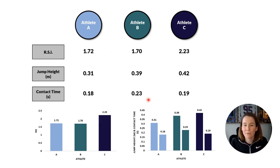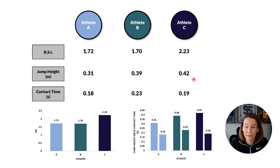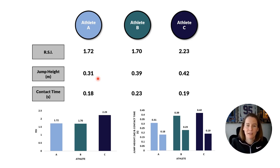With athlete B, I would be looking at whether we are cueing them well enough — are they really trying to be stiff and spend as little time as possible on the floor to reduce contact time? And what impact might that have on their jump height, given that they've already achieved a pretty good jump height? Comparing athlete A to C, athlete C is clearly most impressive in terms of reactive strength abilities, both in terms of RSI and the component parts — jumping 42 centimeters with only 0.19 seconds contact time. Athlete A and C have a fairly similar contact time, but there is a massive difference in jump height, with athlete C clearly demonstrating greater reactive strength.